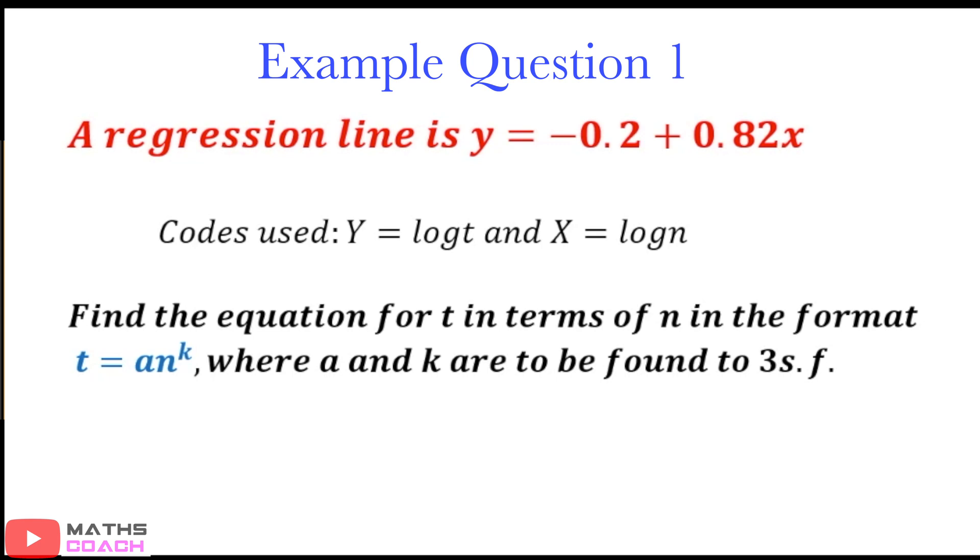So this is an example that we're going to be doing. We've got a regression line y equals negative 0.2 plus 0.82x. Let's just focus on that function. We obviously have a straight line graph. We have a gradient of positive 0.82, and we have a y intercept of negative 0.2. We are given codes y equals log t is equal to y, and log of n equals to x. Now the question here is find the equation for t in terms of n in the format, and this is our function, t equals a n to the power of k, and a and k are unknown constants to be found.